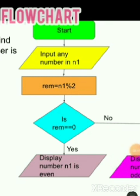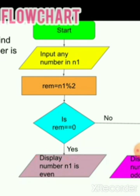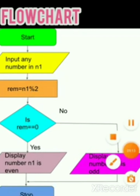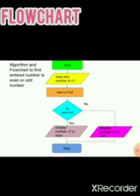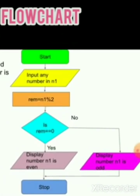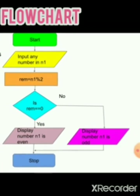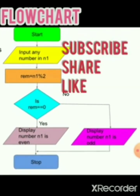You have to write labels 'yes' and 'no' on the branches. After displaying the result, the program should stop — use the terminator symbol for stop. After both the 'yes' and 'no' branches, the flow leads to stop. For an actual practical implementation in JavaScript, I've already written the code — the link is in the description. Hope you understood. Please subscribe for more updates.